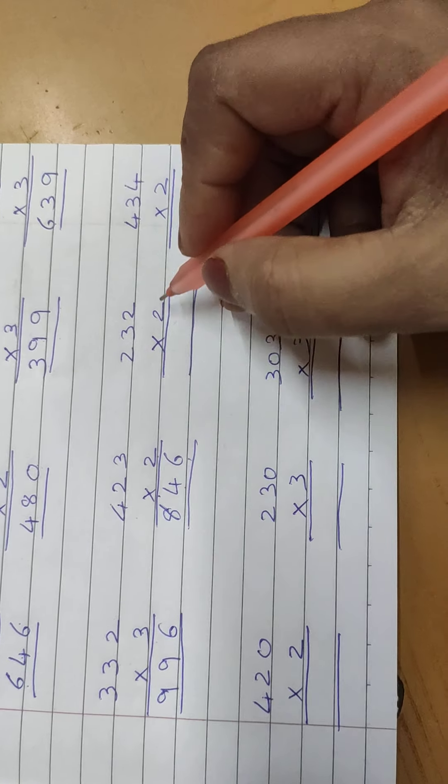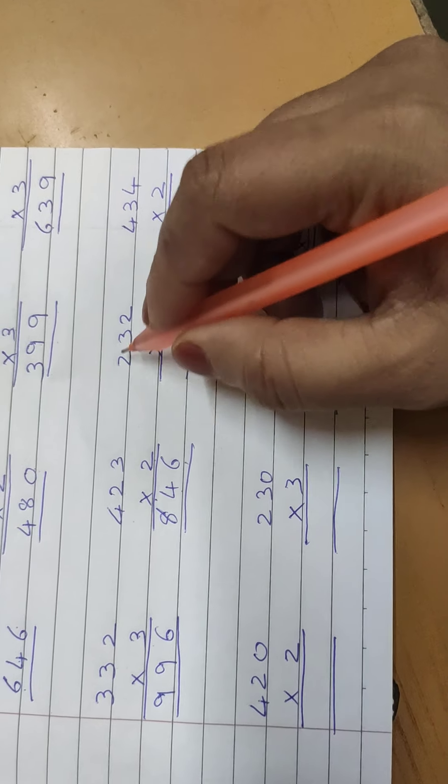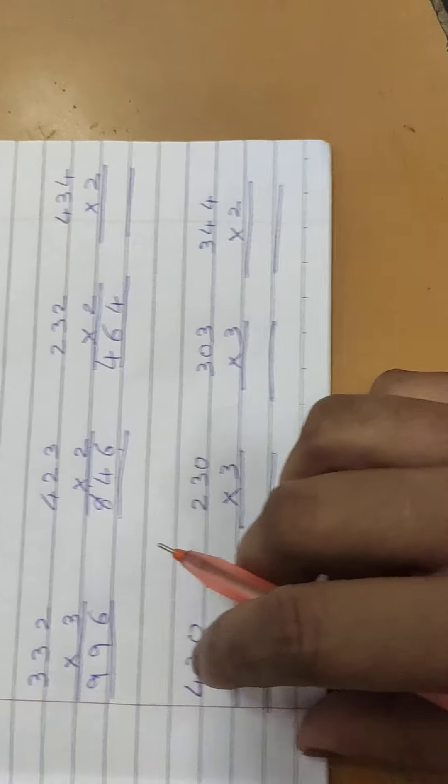232 multiply by 2. 2 twos are 4, 2 threes are 6, 2 twos are 4. 464.